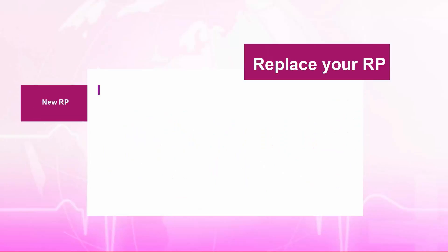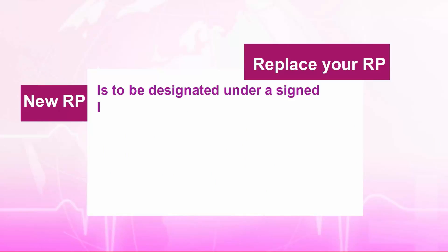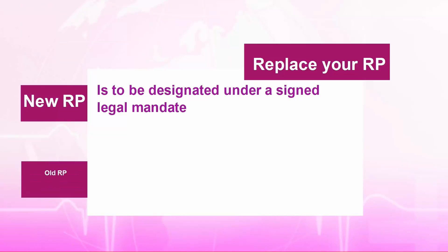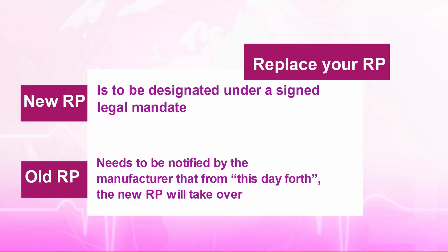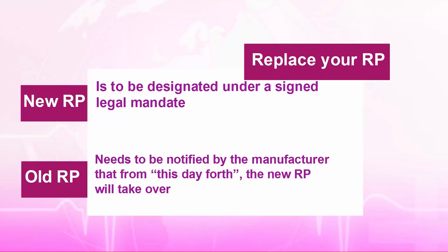Here is the procedure to replace your RP. The new RP must be designated under a signed legal mandate before terminating the agreement with the current RP. The outgoing RP needs to be notified by the manufacturer that from a specified date, the new RP will take over. In all cases, the products must be notified or re-notified to the EU cosmetic products notification portal by the new RP.